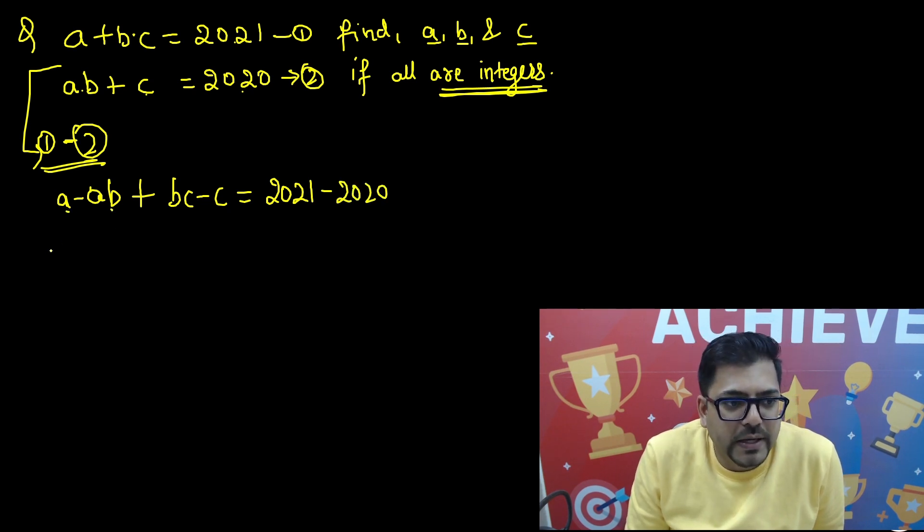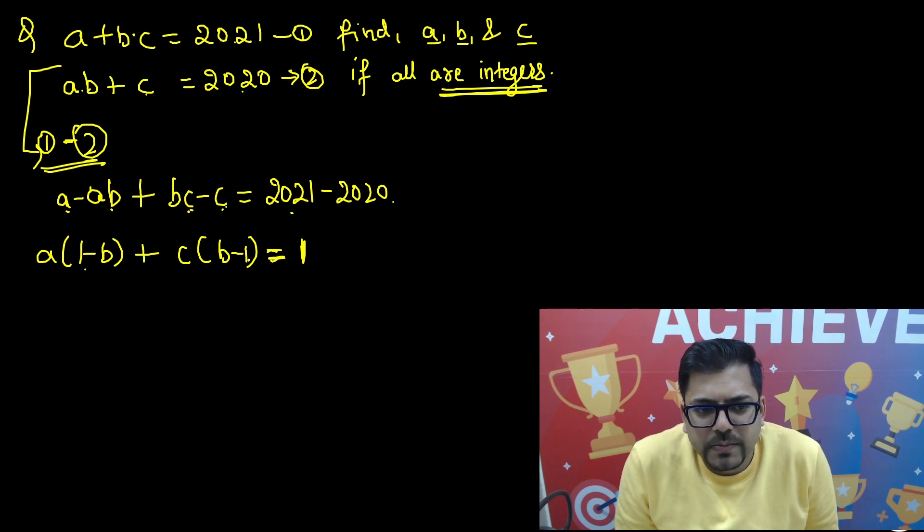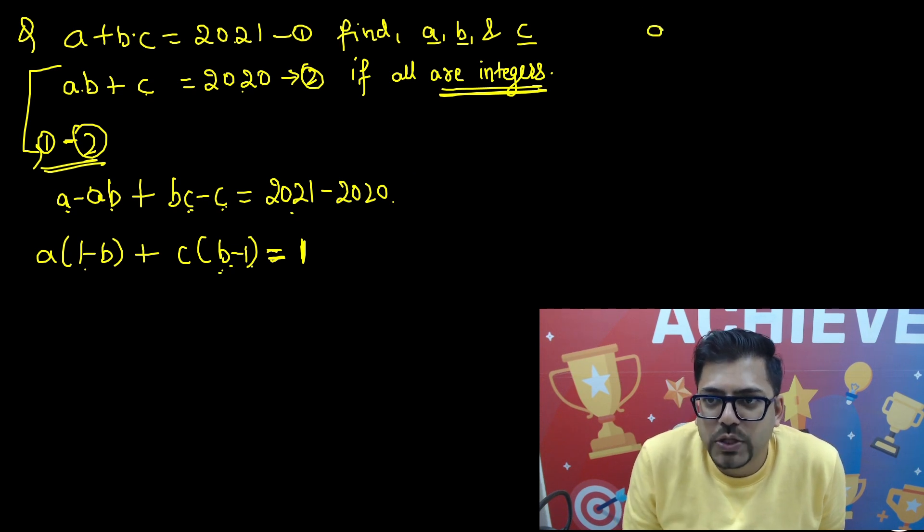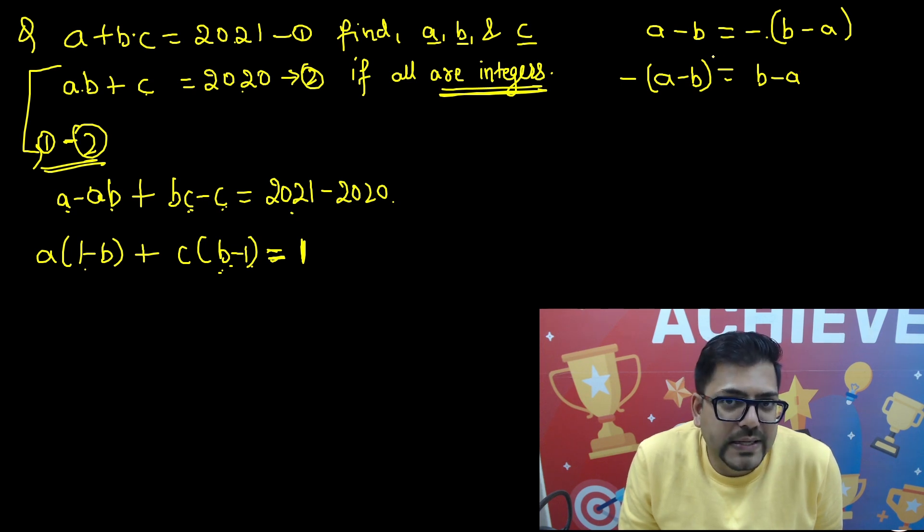Now A minus AB. I'll get A minus AB and then plus I'll get BC minus C. In the right hand side, 2021 minus 2020. Cool. Now A minus AB, A is common. So 1 minus B. From here plus I'm getting C common. So C is common, so B minus 1. And here that's 1.